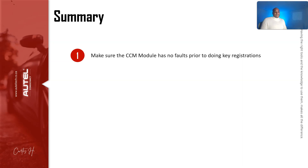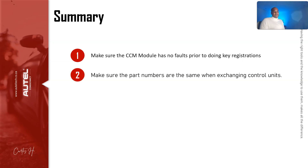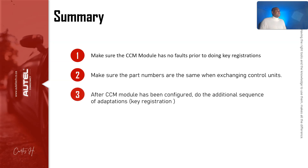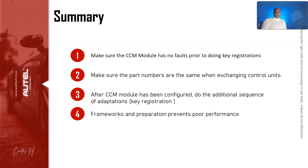If it's a hard fault, follow the diagnostic procedures to determine if it needs to be replaced. Make sure the part numbers are the same when exchanging control units — there have been many cases where clients get a variation by year, maybe newer or older, and it's always problematic. After the CCM module has been configured, do the additional sequence of adaptations. Any module replacement will need some layer of coding or adaptation, so look at the service information.